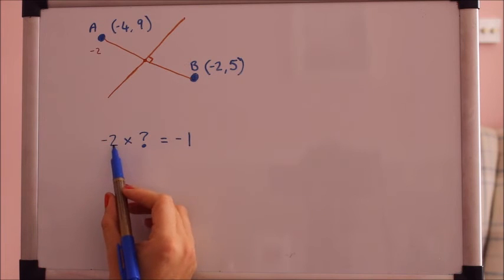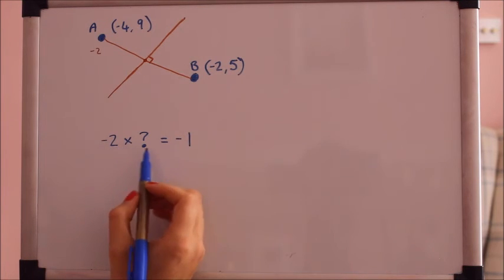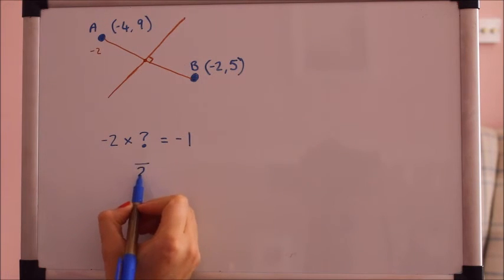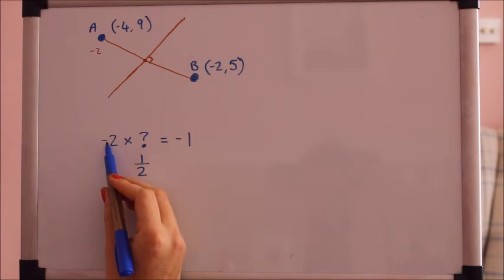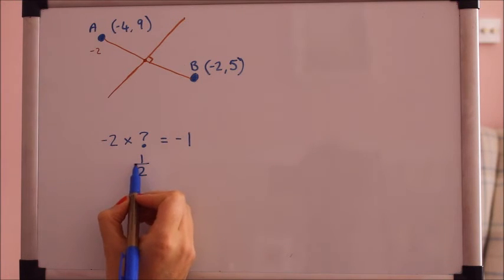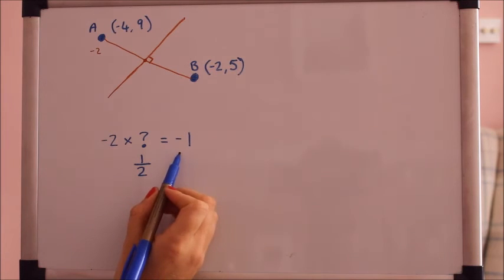a quick way of doing it is to flip it round to get the reciprocal so 2 will go on the bottom and reverse the sign. Instead of it being negative it will be positive. Minus 2 times a half gives you minus 1.